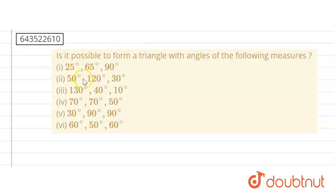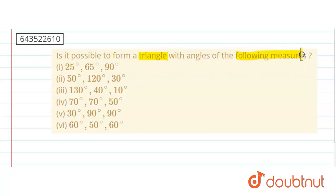The question is we just have to check whether it is possible to form a triangle with angles of the following measures. The first set is 25, 65, 90.